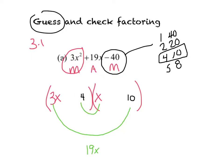So I'm going to guess the 4 goes here, and I'm going to guess the 10 goes here. Now I check my insides, 4x, 4 times x, and I check my outsides, 3x times 10 is 30x. Can those ever add up to 19? Do 4 and 30 ever make 19? Well, no, so I know those are incorrect.